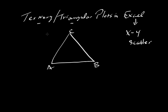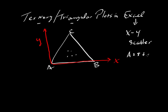Excel doesn't know how to make these kinds of plots. Instead, what Excel does is make scatter plots with an X horizontal axis and a Y vertical axis. So what we want to do is translate points that fall into the triangle — where A plus B plus C equals 1 or 100% — into XY coordinates.